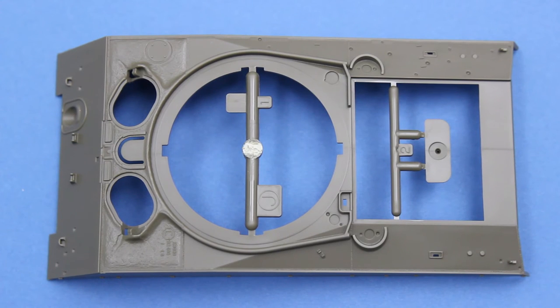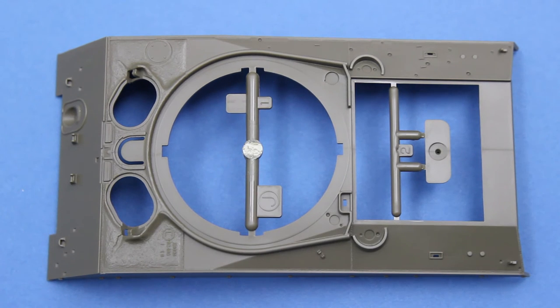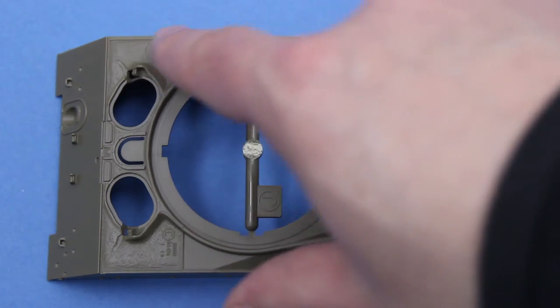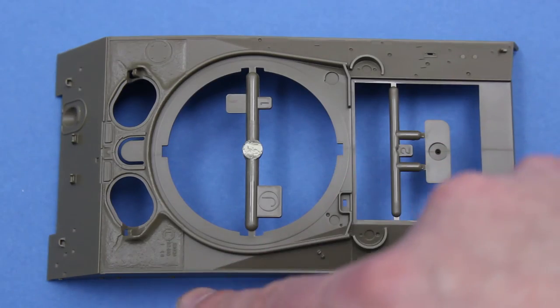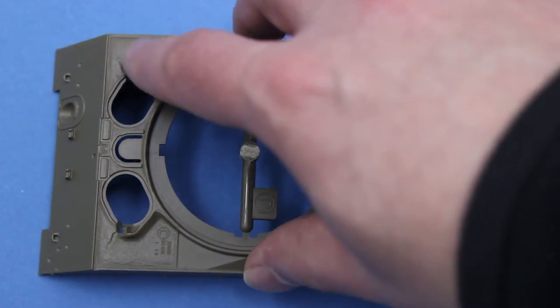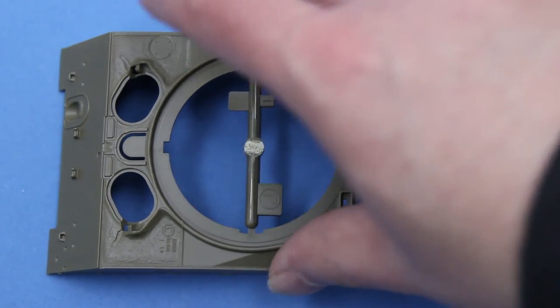This is the single piece upper hull. I'm very pleased to say that this is an entirely new part. And doesn't have anything to do with the rather nasty old M4A3 kit. That came out from Tamiya in the late 1980s. And you can see some very nice weld detail. That wasn't indented like it was in the old kit.